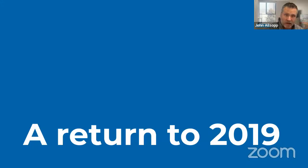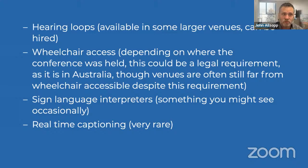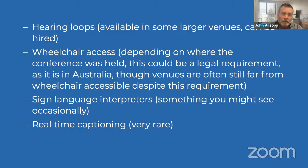Let's start by going back pre-COVID and thinking about what most people would have considered the essential and sufficient features for an accessible conference. They might have hearing loops, which larger venues generally have. Wheelchair access, depending on where the conference is held, might be a legal requirement as it is in Australia, though venues here are often far from truly wheelchair accessible. Occasionally you might see sign language interpreters, or very rarely real-time captioning.